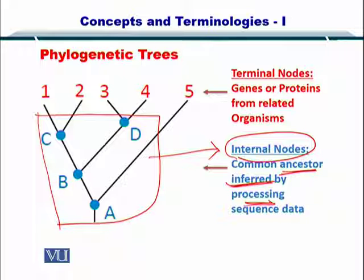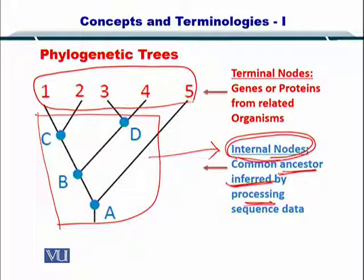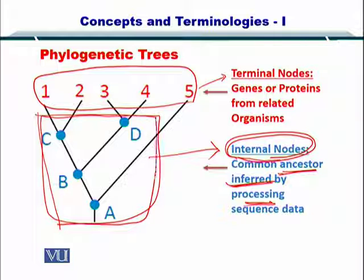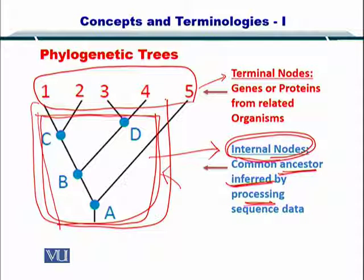What is important to understand is the term internal nodes. These are the terminal nodes or external nodes, and these are the internal nodes. These nodes are not shown to the user except in the form of a phylogenetic tree.